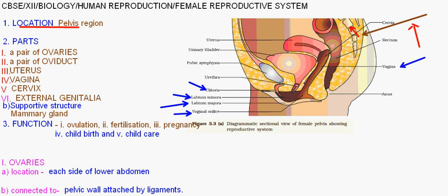Now coming to the parts of the female reproductive system. The female reproductive system consists of a pair of ovaries, a pair of oviducts, uterus, vagina, cervix, and external genitalia.